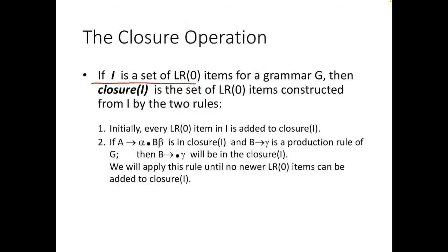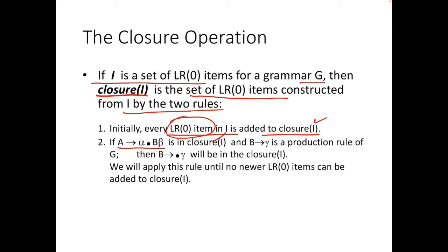The closure operation: if I is a set of LR0 items for grammar G, then closure of I is a set of LR0 items constructed from I by two rules. First, initially every LR0 item in I is added to closure of I. That means if you are at the initial state, all the LR0 items will be added to the closure of I.